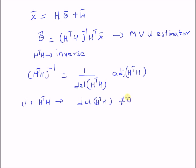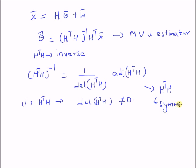The matrix H^T H should be symmetric. Since we are multiplying the transpose of a matrix with itself, the product is always symmetric. So this condition is always satisfied for this product matrix.